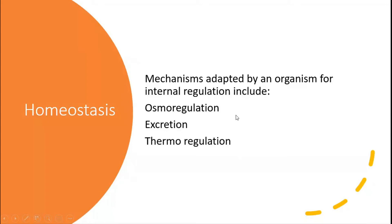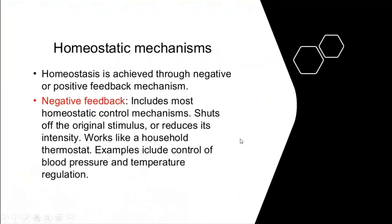Harmful waste material is excreted from the body through excretion, and temperature is maintained through thermoregulation. Homeostasis is basically achieved through negative and positive feedback mechanisms. Negative feedback mechanisms are used to perform the body's proper functioning, maintaining most body functions.